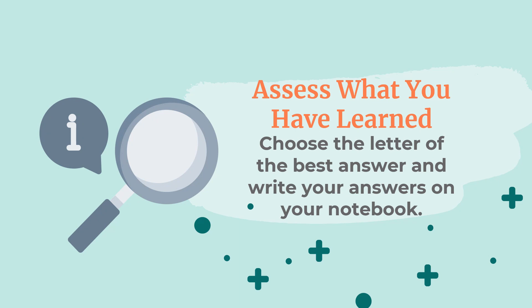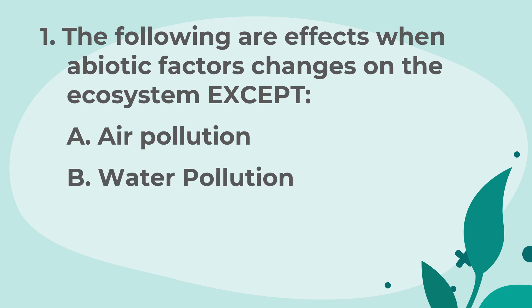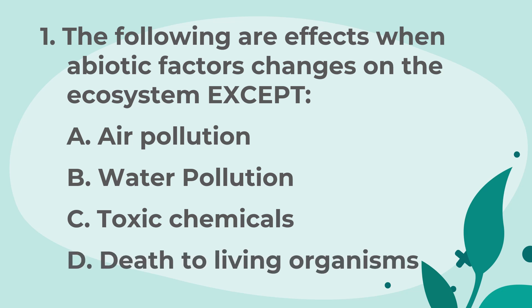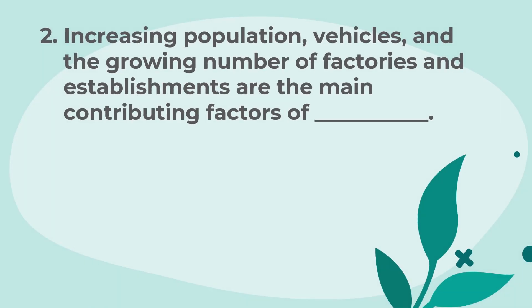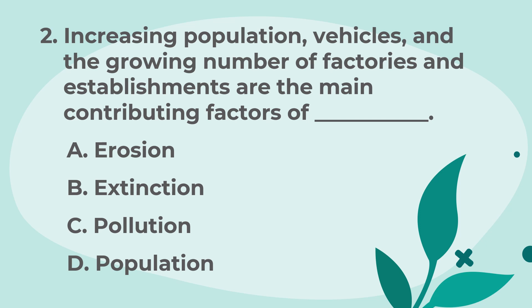Now let us assess what you have learned by answering this 5-item quiz. Choose the letter of the best answer and write your answers on your notebook. Let us start. 1. The following are effects when abiotic factors change on the ecosystem except: A. Air pollution. B. Water pollution. C. Toxic chemicals. D. Death to living organisms. 2. Increasing population, vehicles, and the growing number of factories and establishments are the main contributing factors of — A. Erosion. B. Extinction. C. Pollution. D. Population.